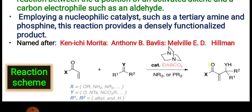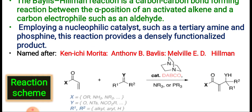In this reaction, for the activated alkene, X may be OR, NH2, or NR2. Y is oxygen, NTS, or NCO2. R1 and R2 refer to alkyl groups, aryl groups, or simple hydrogen. There are lots of options — particularly if you need selectivity, you can use anything. This is the reaction scheme.